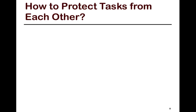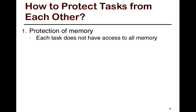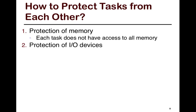A key question that arises with passive resources like memory is how do you protect tasks from each other. Protection of memory deals with the notion that each task does not have access to all of memory. If you've allocated a certain chunk to each process, how do you make sure that one process does not inadvertently or purposefully clobber other tasks' memory?